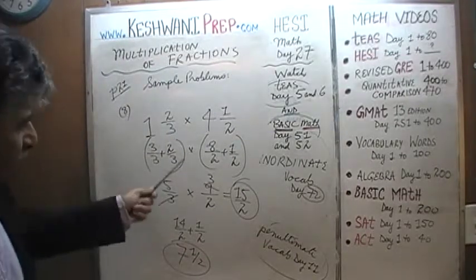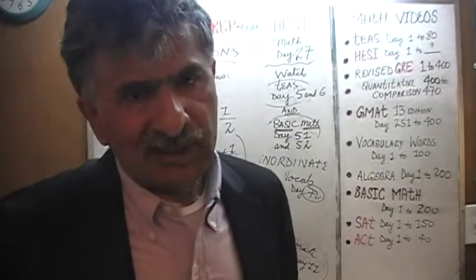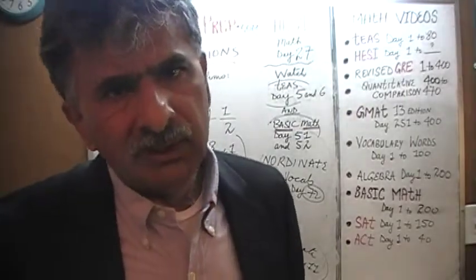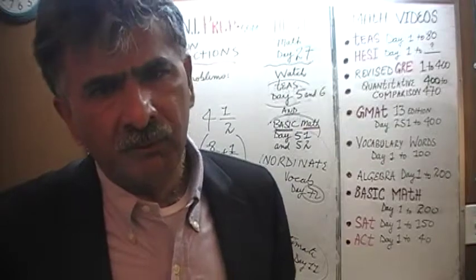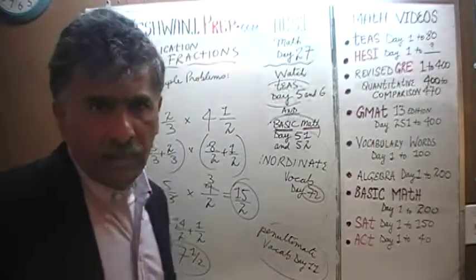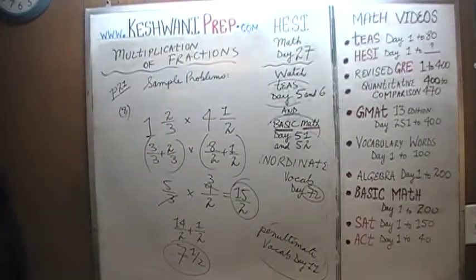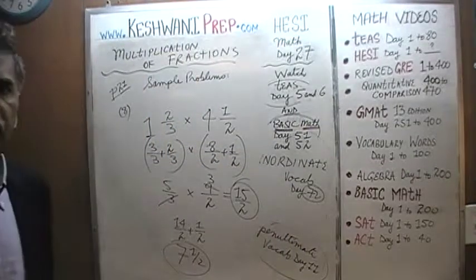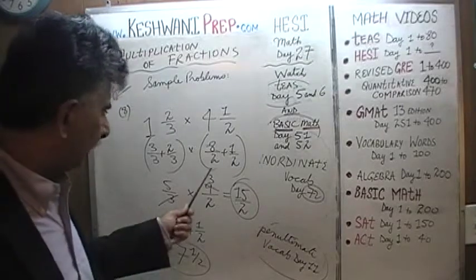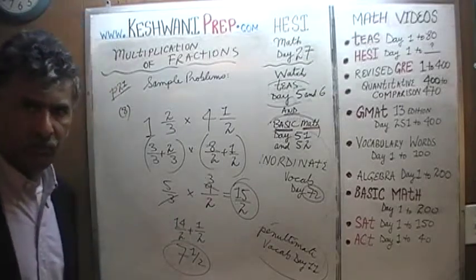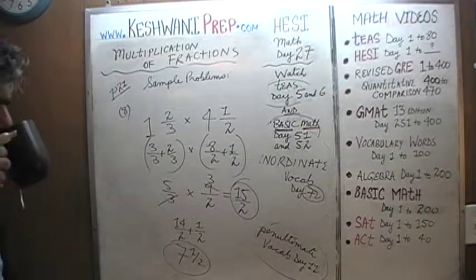This traditional method — converting to improper fractions — is the more orthodox, classical, academic way. If you do not see the non-traditional shortcut, then the traditional way is your salvation. As you can see, it's not that bad actually.